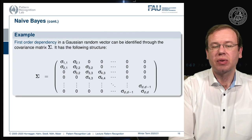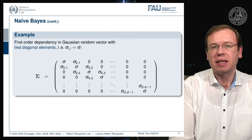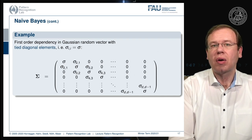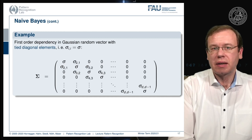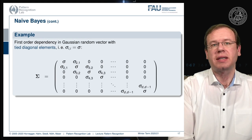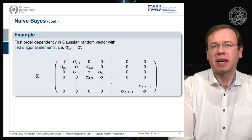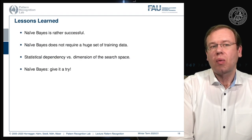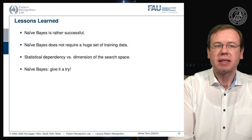Another trick to reduce parameters is to introduce tied parameters. For example, we can require all diagonal elements to have the same parameter, introducing just a single sigma across the complete diagonal. This is one idea of parameter tying to further reduce the number of unknowns.